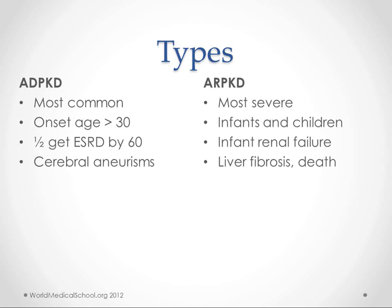It comes in two varieties. One is the autosomal dominant polycystic kidney disease and the other is autosomal recessive. The dominant is most common and usually is symptomatic after age 30. Half of them get end-stage renal disease by age 60, and many of them get cerebral aneurysms. The recessive disorder — a common pattern — is often more severe. It's more often found earlier in life, in infants and children. These kids will almost indefinitely go into renal failure as infants, and it leads to liver fibrosis as well, and many die from this.